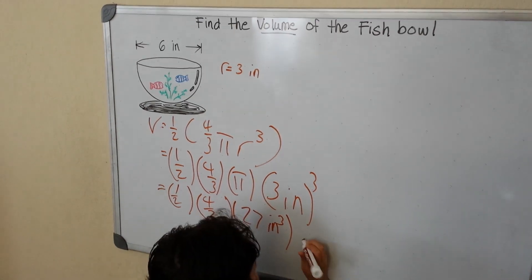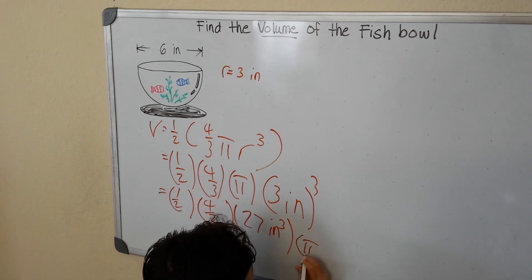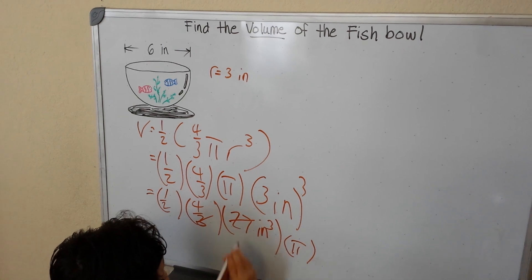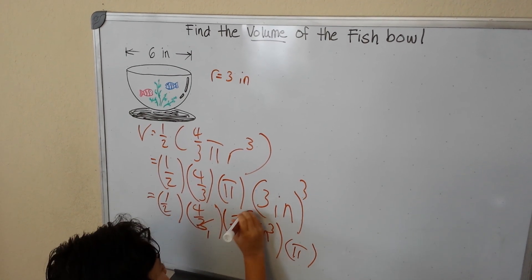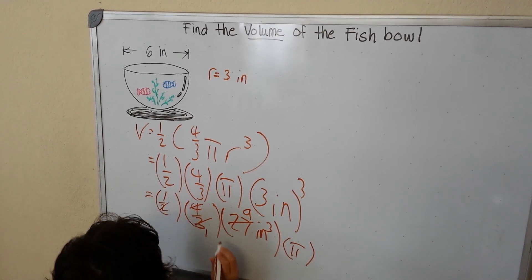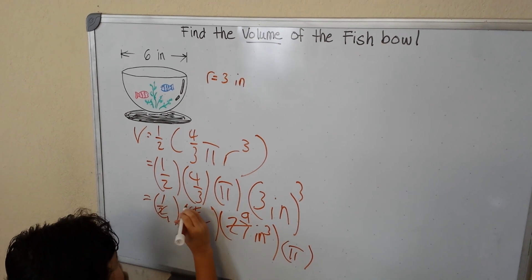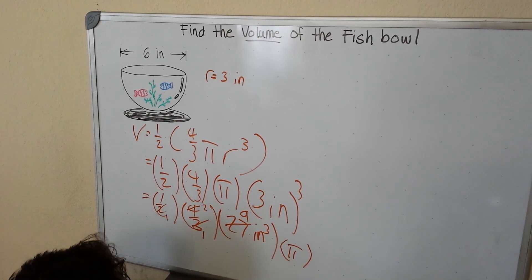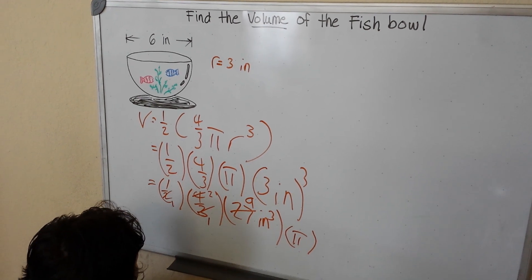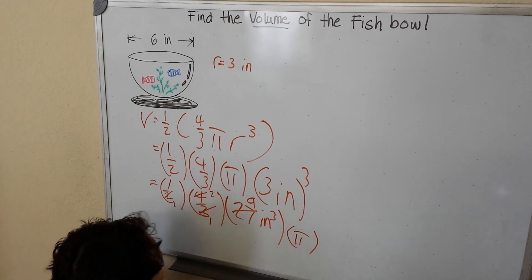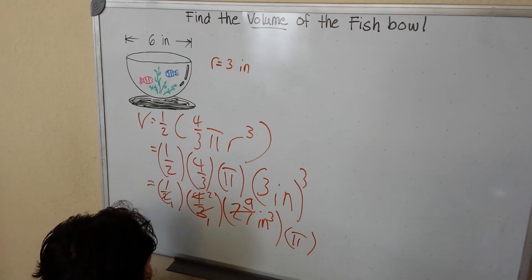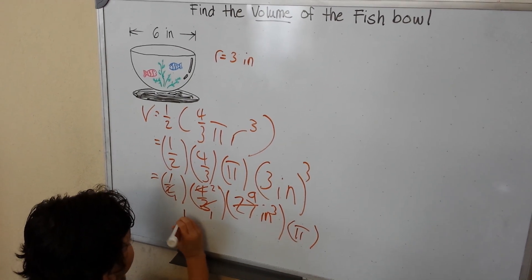So then we're going to get our pi next. 3 and 27 can cross-cancel to 1 and 9. How about 2 and 4? They could cross-cancel to — 2 becomes 1 and 4 becomes 2. So 1 times 1 is 1, times 2 times 2 times 9. 2 times 9 is 18.